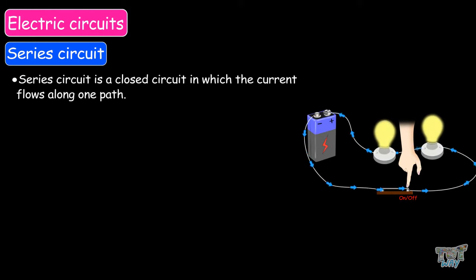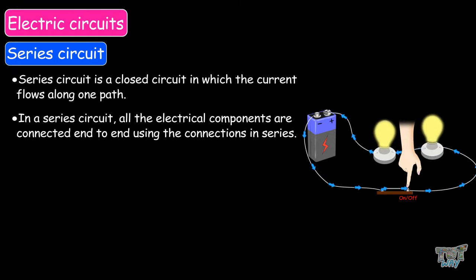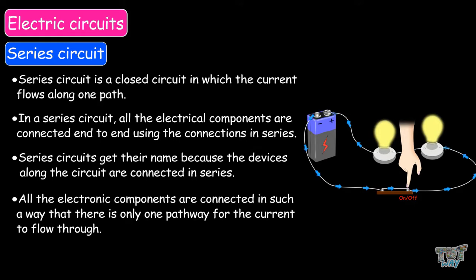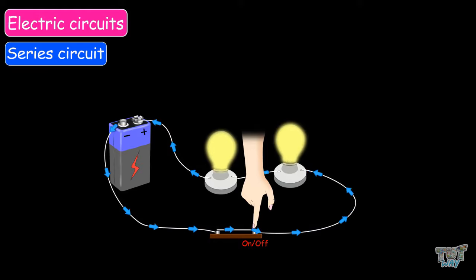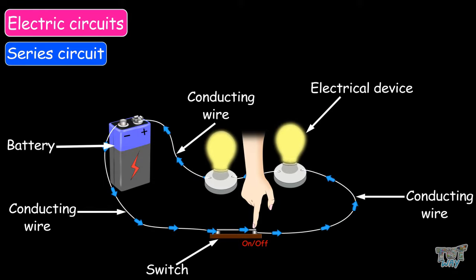A series circuit is a closed circuit in which the current flows along one path. In a series circuit, all the electrical components are connected end-to-end using connections in series. Series circuits get their name because the devices along the circuit are connected in series. All the electronic components are connected in such a way that there is only one pathway for the current to flow through. The pathway forms a complete closed loop from the battery through one of the connecting wires to the electronic device and then back to the power through another conducting wire.